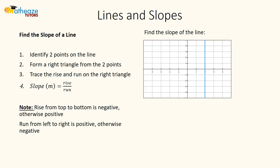Now let's look at the vertical line. Slope is rise over run. We have lots of different possibilities for the rise — for example, from negative 1 to 1, which gives us 2. But what is our run? We don't have a run because it's a vertical line, so the run is 0, which makes the slope undefined. This line has no slope. That covers finding slope from a given line on a graph.